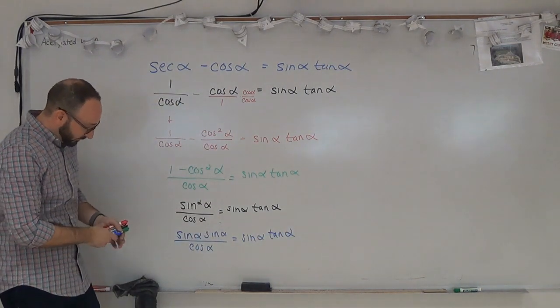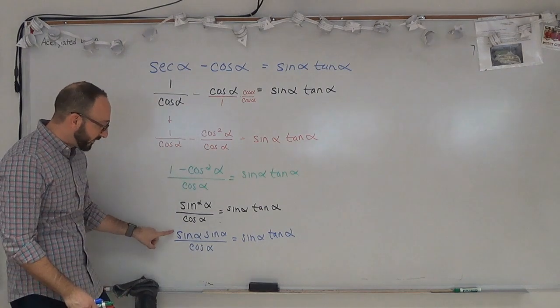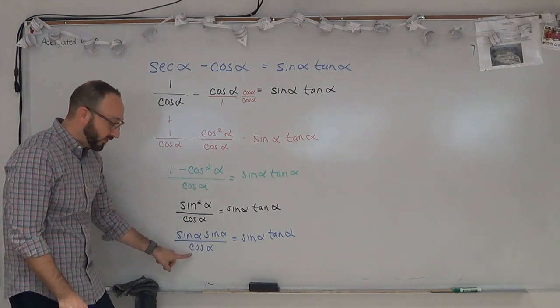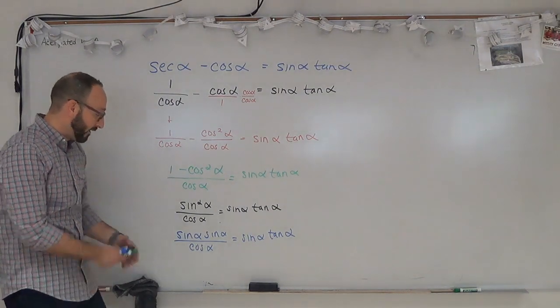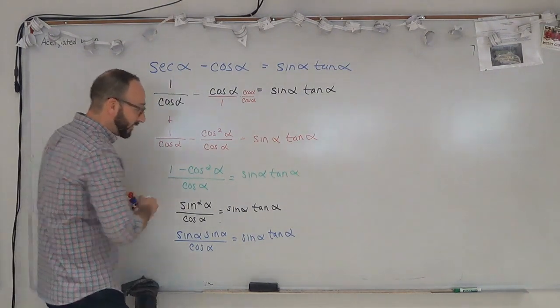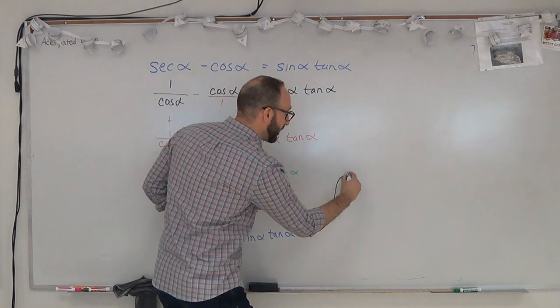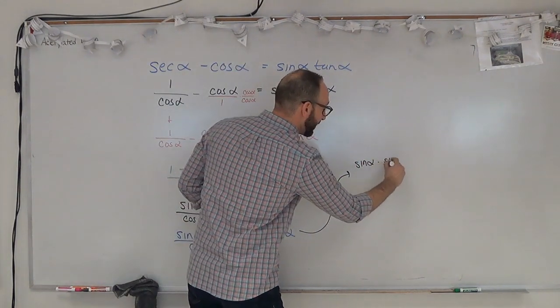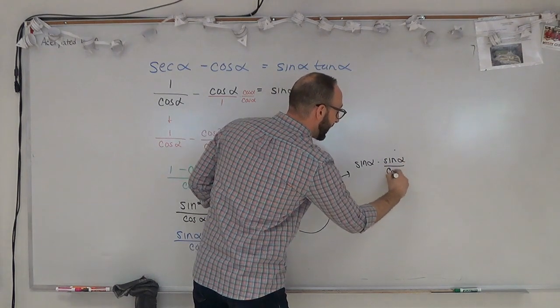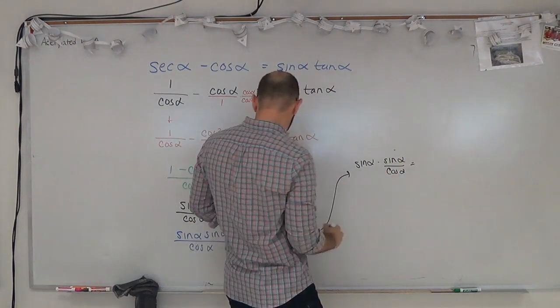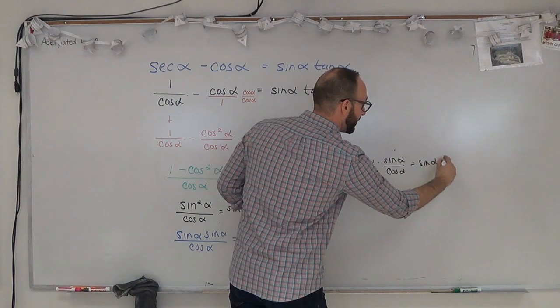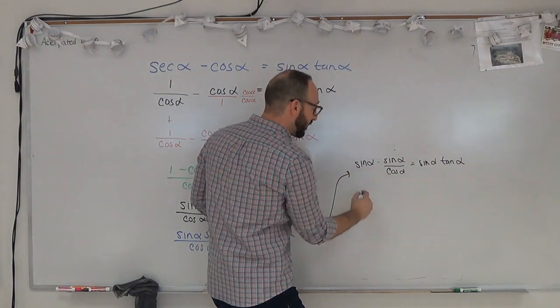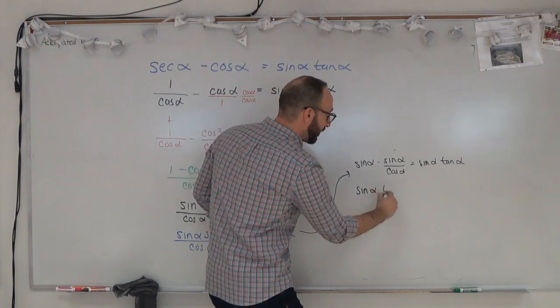And if we look, we have our sin alpha right here, and then sin alpha over cosine alpha is tan alpha. So our final step would be sin alpha times sin alpha over cosine alpha equals sin alpha tan alpha. So sin alpha over cosine alpha, we can replace that with tan alpha.